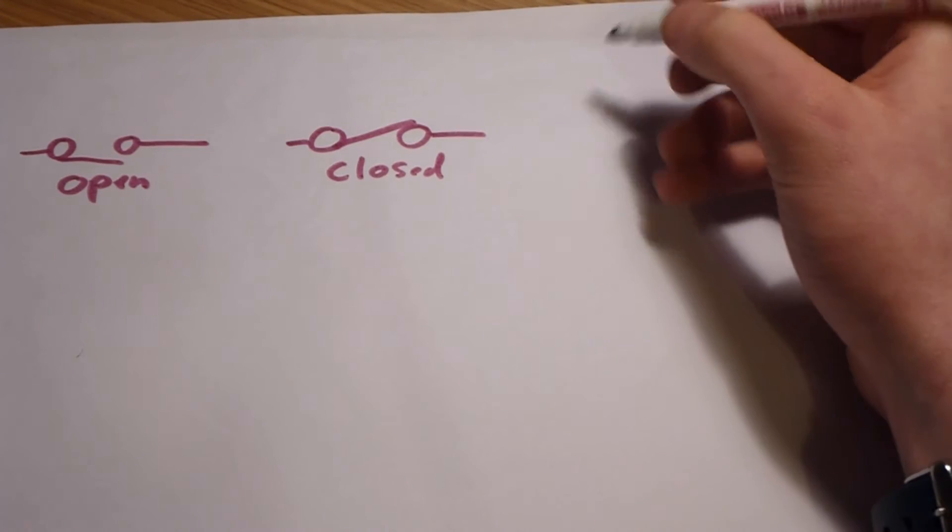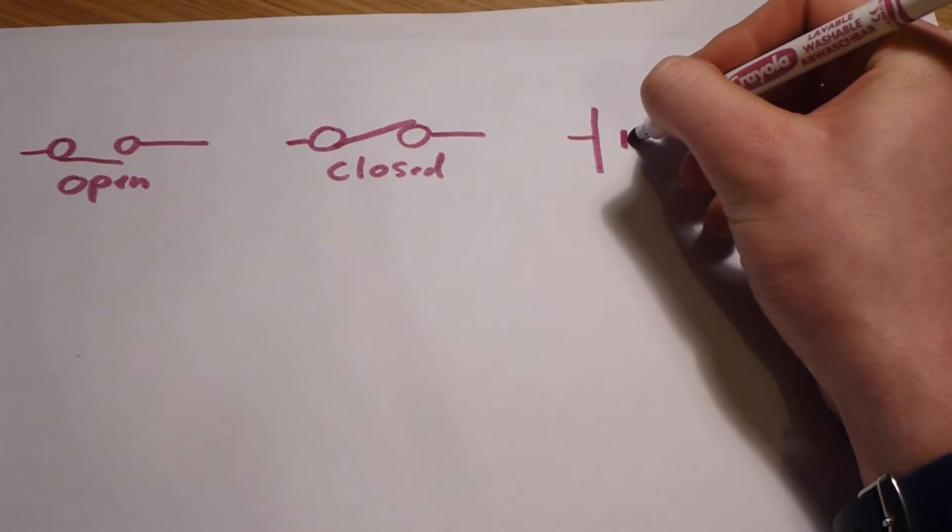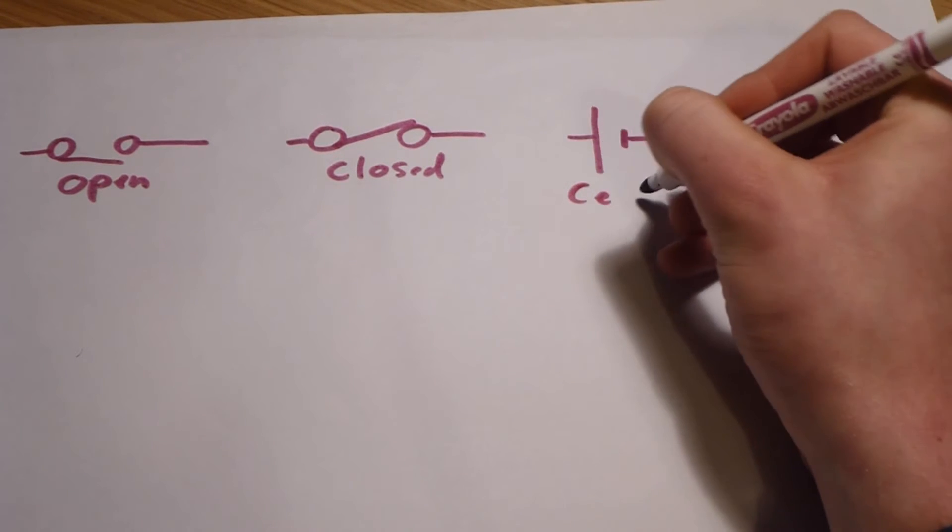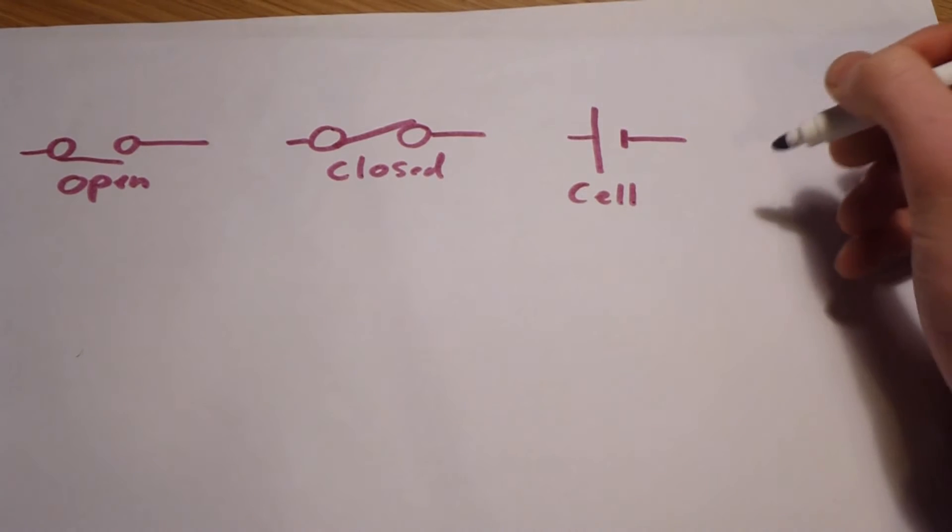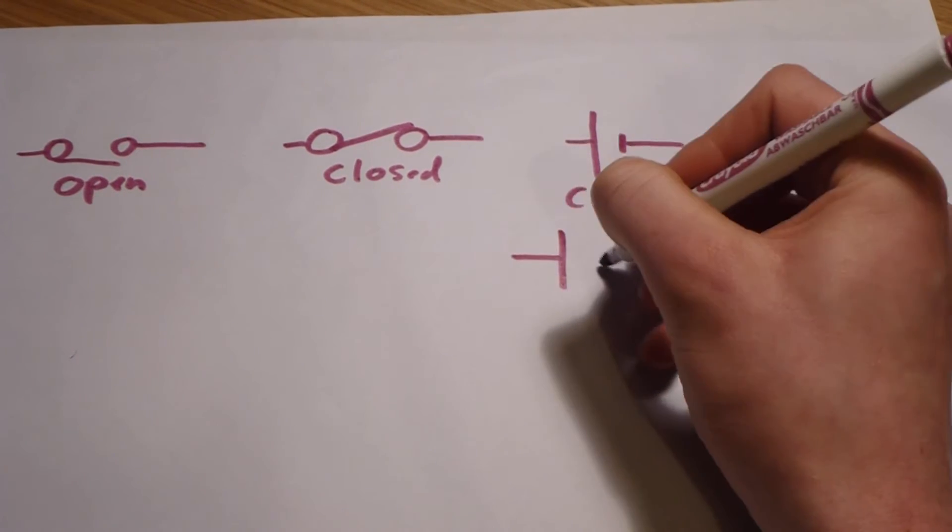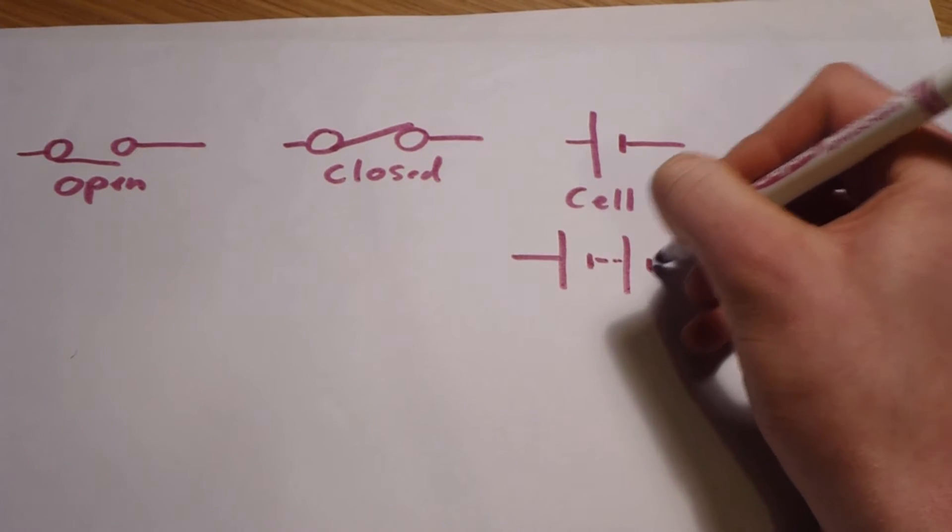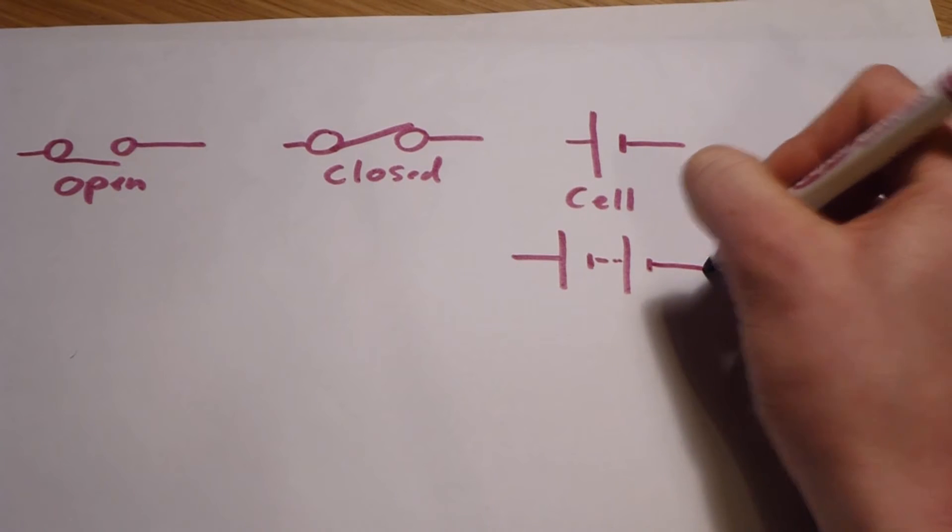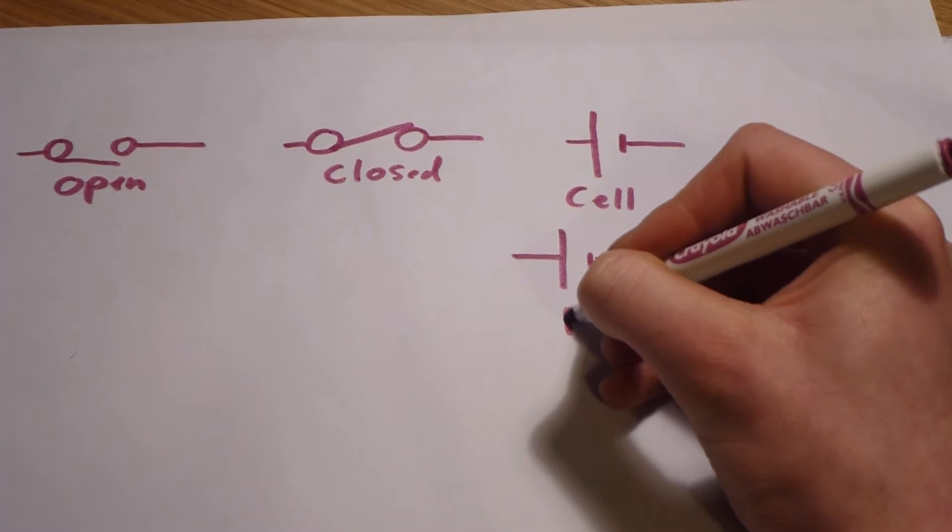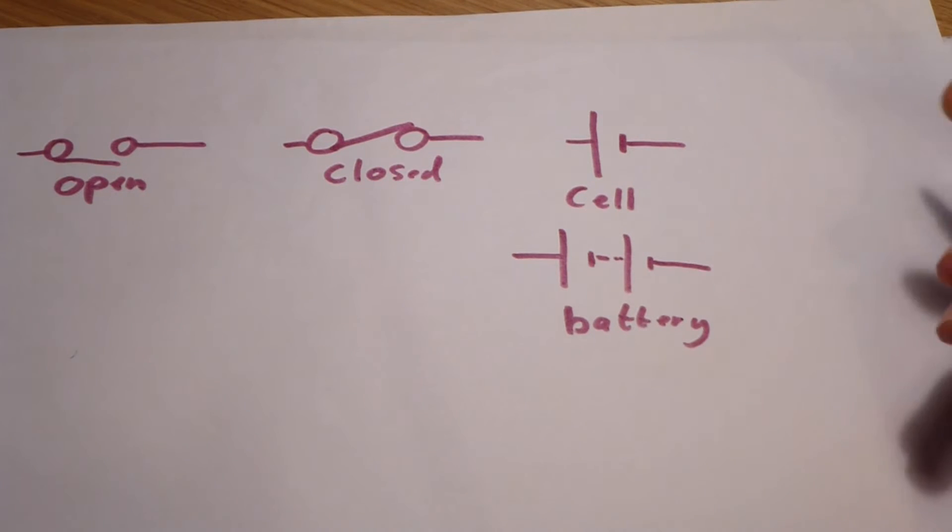After there, there comes a cell. If you have more than one cell, it's called a battery. Now you get a battery of course.